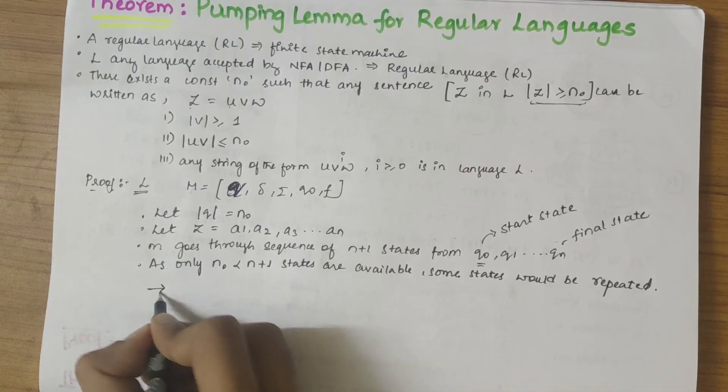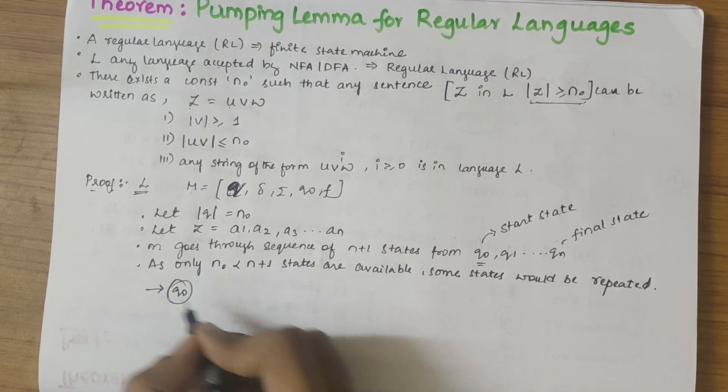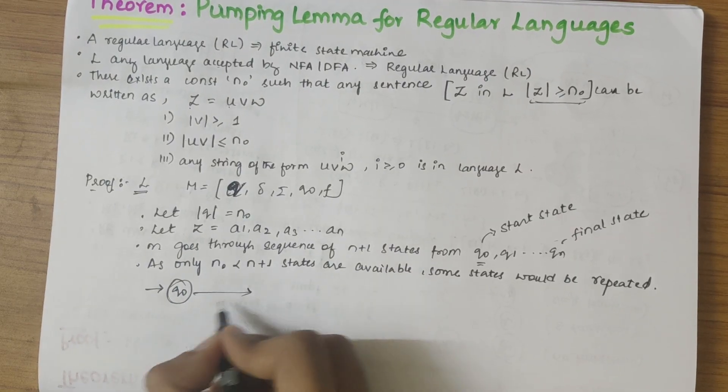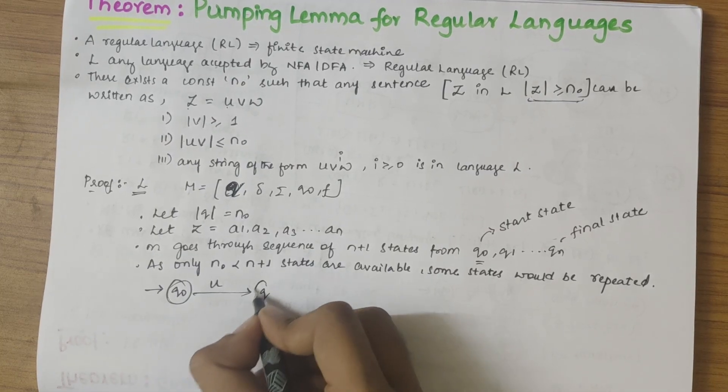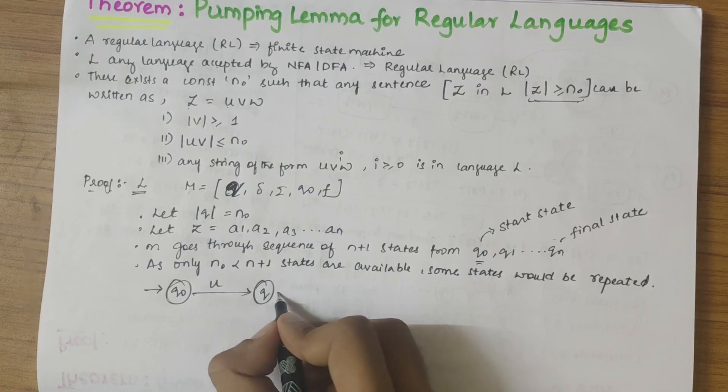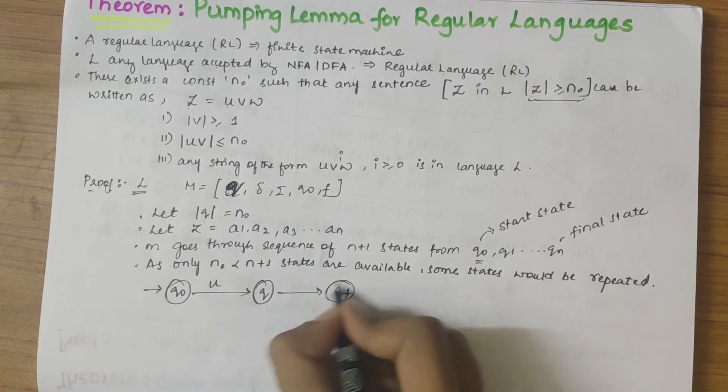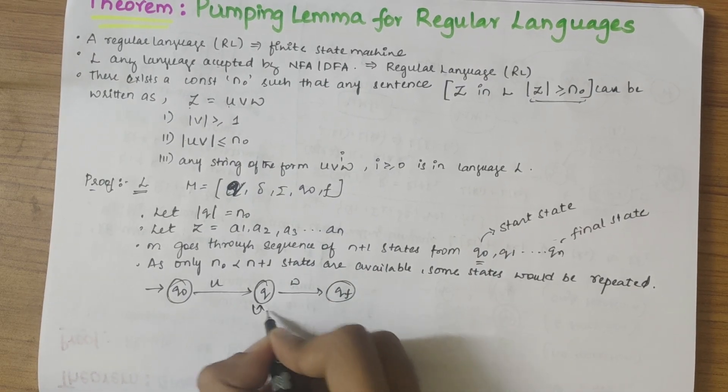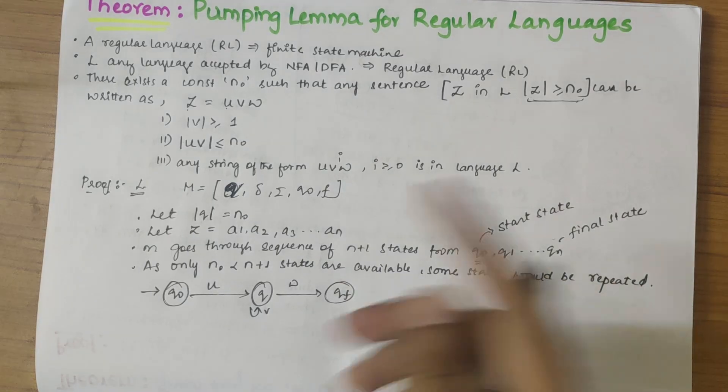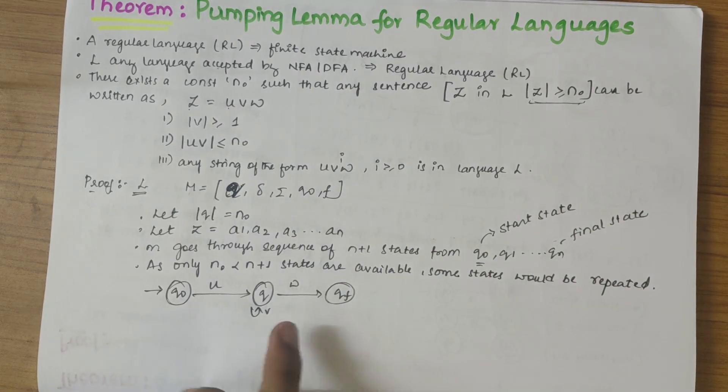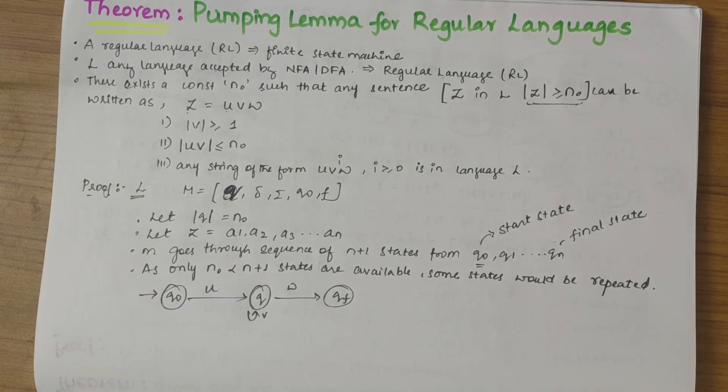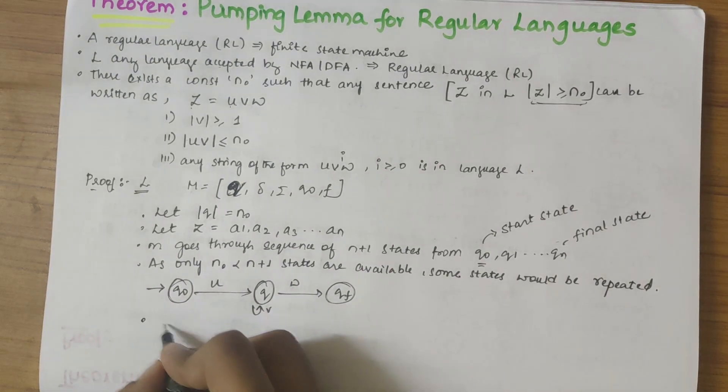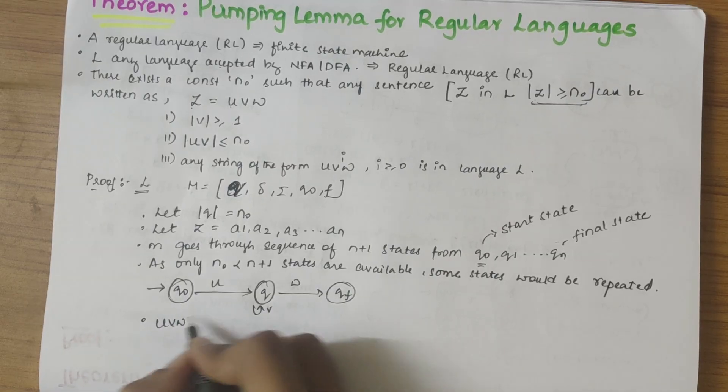In that case the diagram representation would be q naught under u transition would lead to q, and from q we get the final state w, and there could be repetitions happening. So q being the intermediate state, q naught being the start, and qf being the final state. So here u, v, w can be split as...